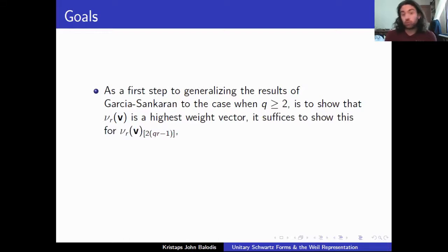And it turns out, actually, we don't need this full form. So like I mentioned, that form φ in a specific degree just recovers the classic Kudla-Milson form. So it turns out it actually suffices to just prove this is the case for a certain degree component of this form, ν_r.